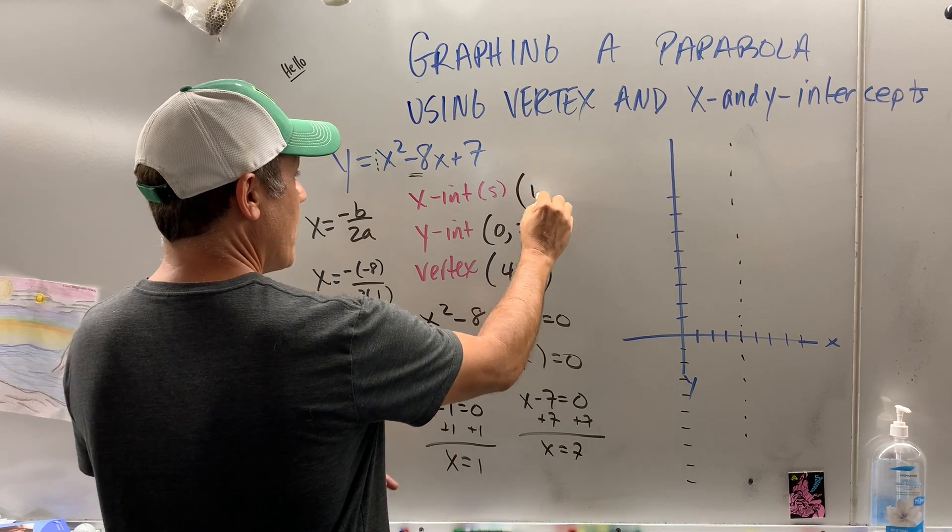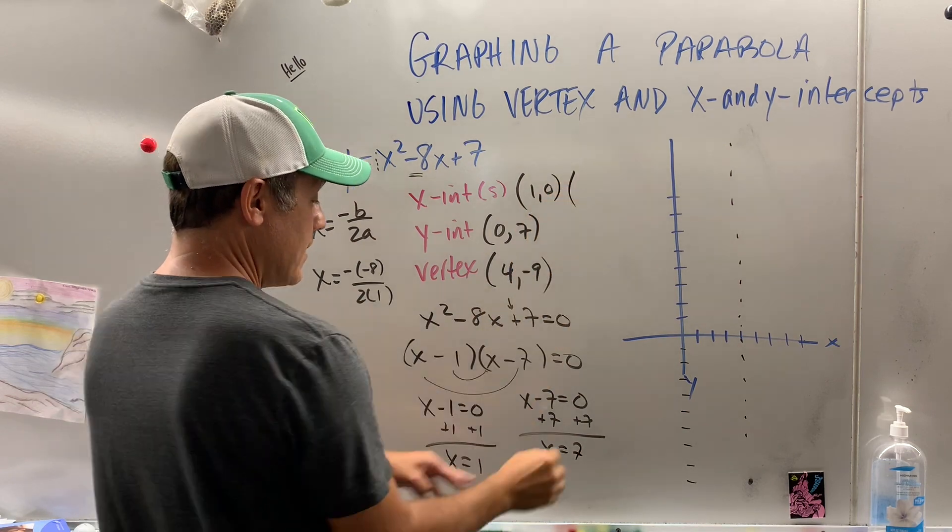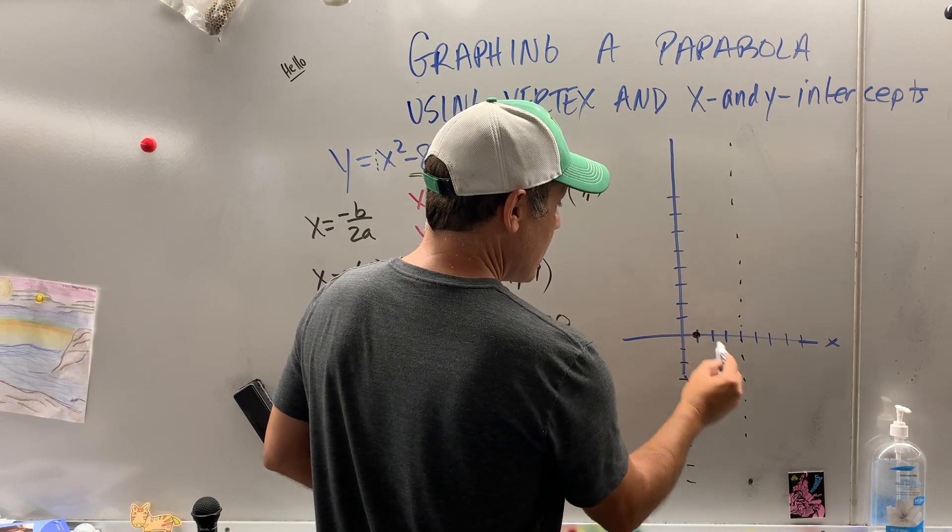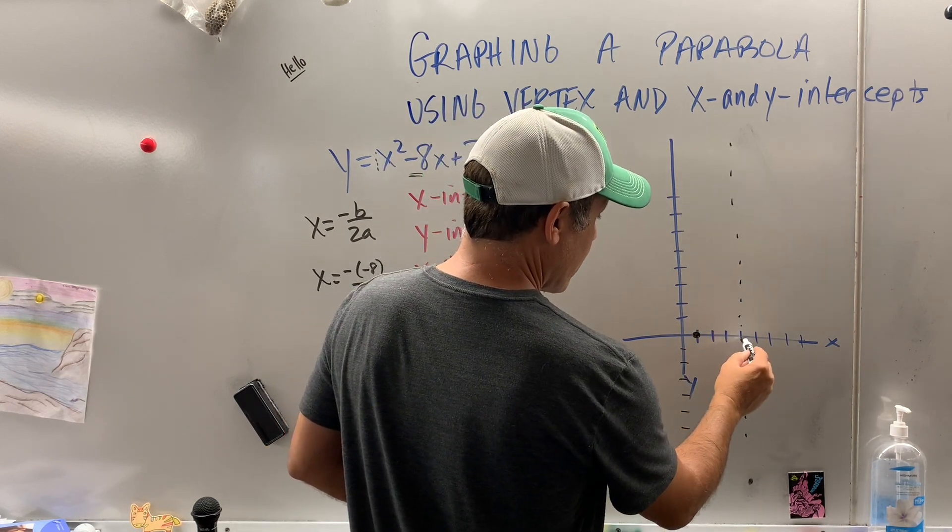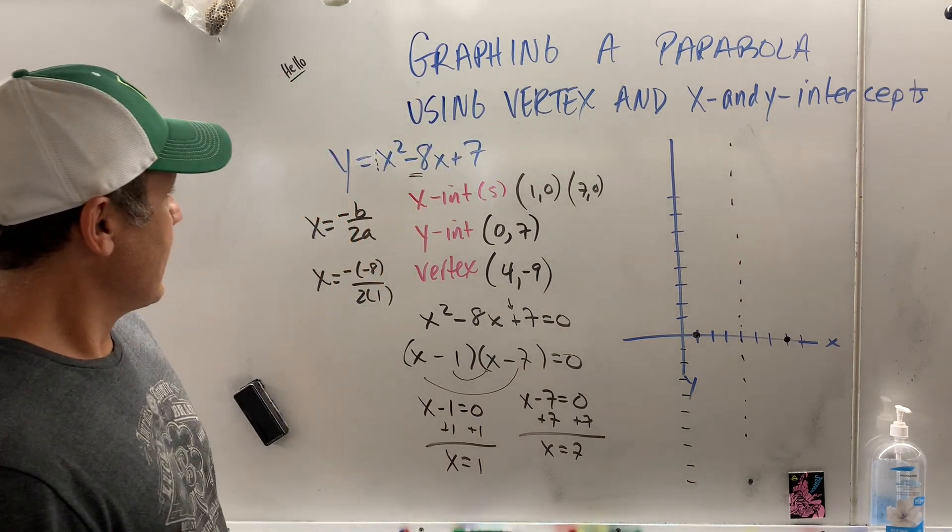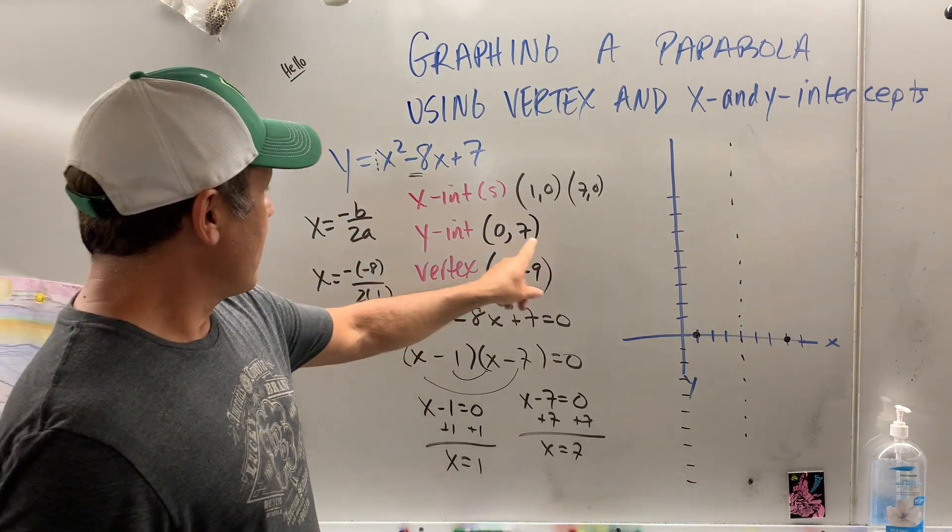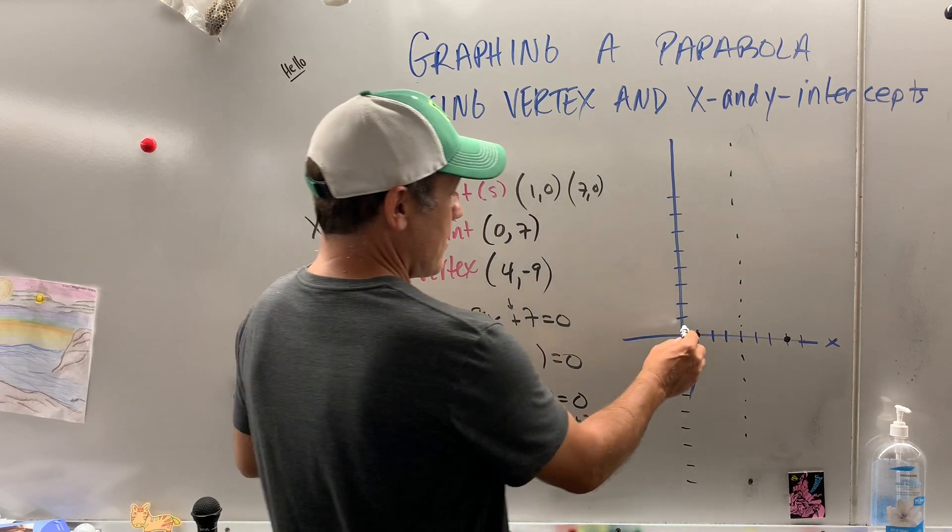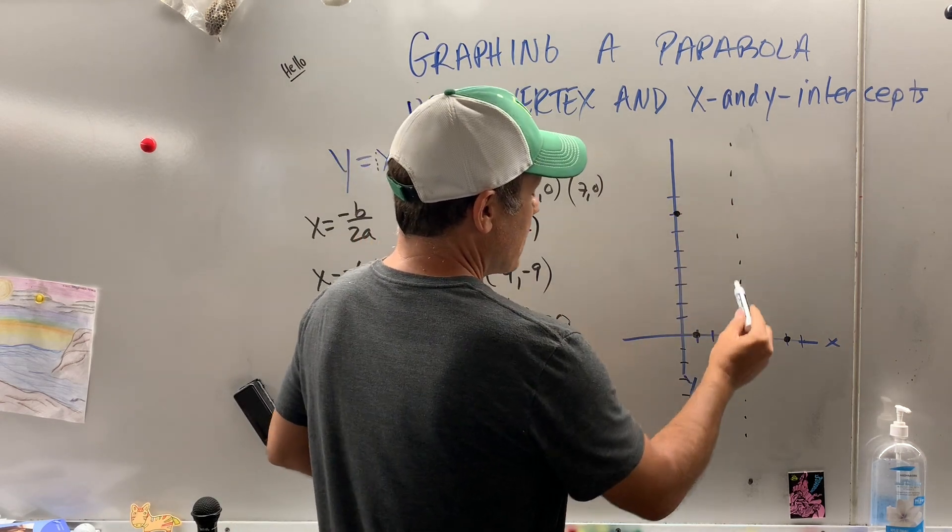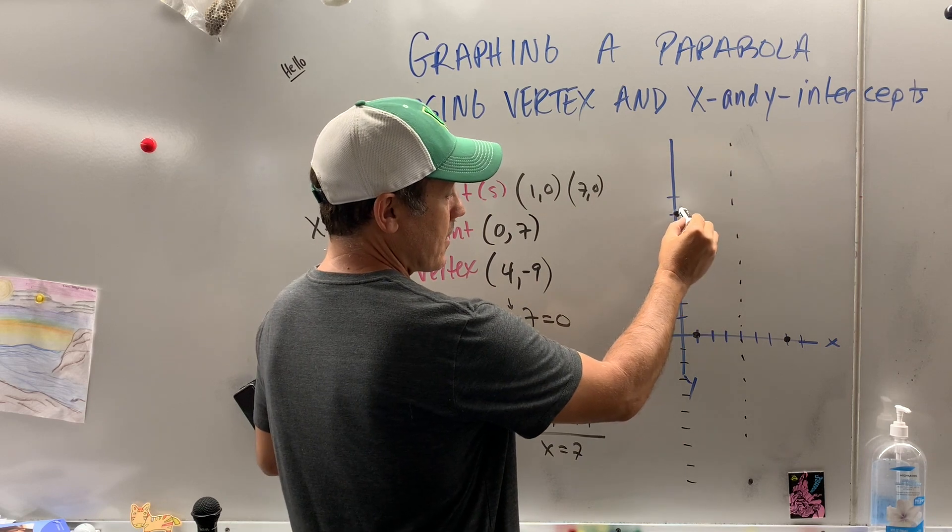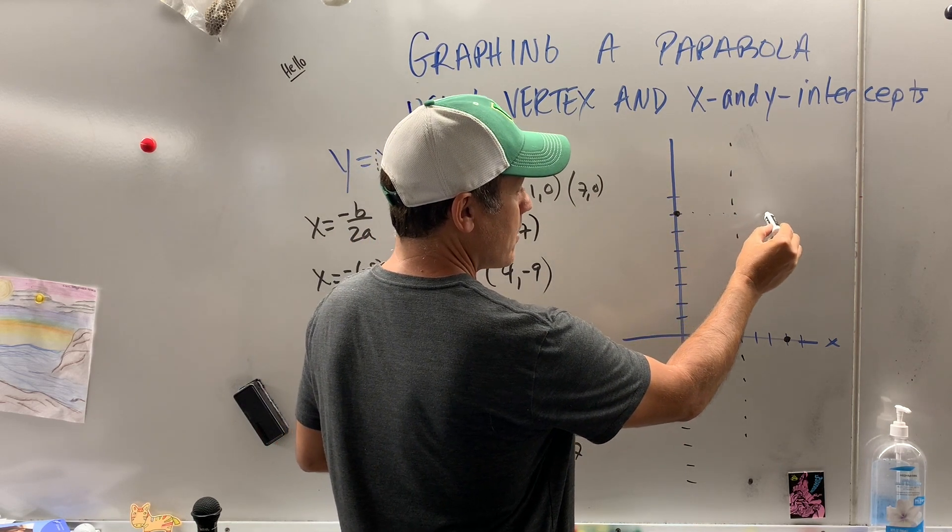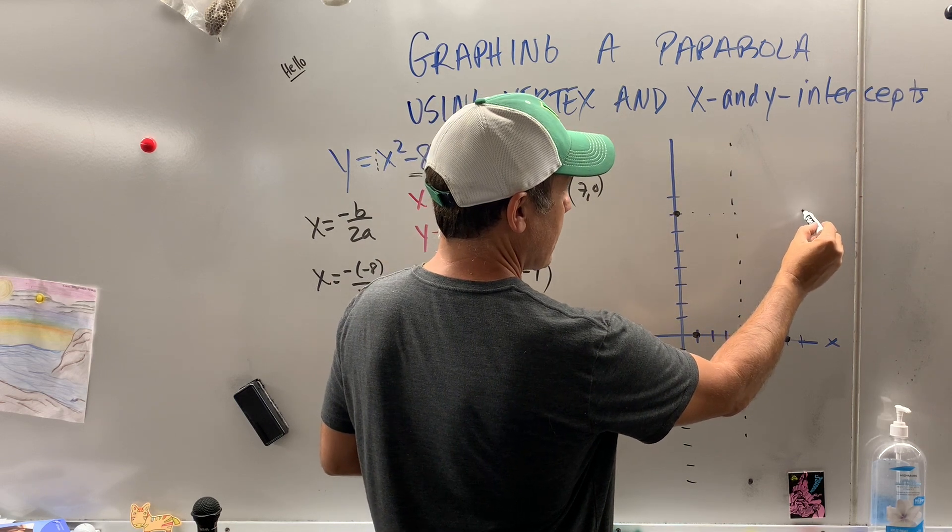So my intercepts are 1, 0, and 7, 0. 1, 0, and so that's 4, 5, 6, 7, 0. Now, let's find the y intercept, it was 0, 7, 1, 2, 3, 4, 5, 6, 7. So it's got to be symmetrical. So check this out. If you go 1, 2, 3, 4, you go 1, 2, 3, 4, and you're going to get to 8.